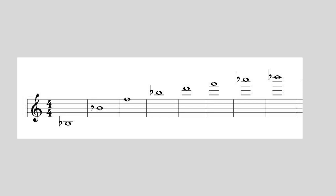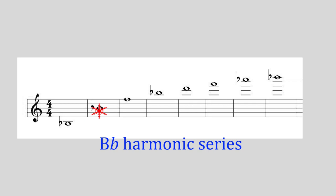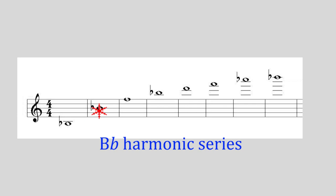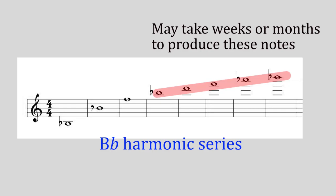When practicing overtones you first choose a fundamental note — either B flat, B, C or C sharp — and while fingering those notes you play the first few overtones in any order. Once you've gotten better at it and can play these notes at will, you can then add more overtones. Some overtones are easier to produce than others. For example, if you finger the low B flat, you'll probably sound the F note which is the easiest to produce. The next easiest is the B flat below that note. The rest you may find difficult, and it may take weeks if not months before you're able to produce them.